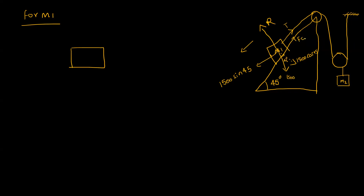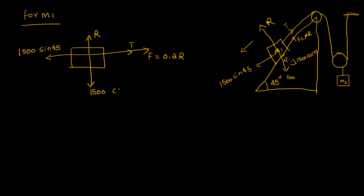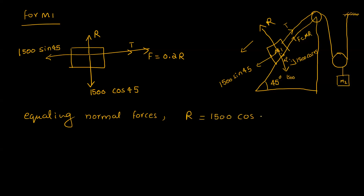The frictional force F is equal to mu into R, where mu is 0.2. We equate normal forces in the vertical direction. R is equal to 1500 cos 45. Therefore, the frictional force is equal to 0.2 multiplied by 1500 cos 45.